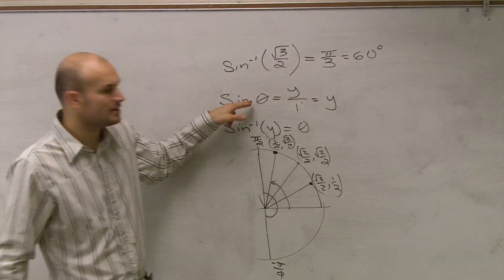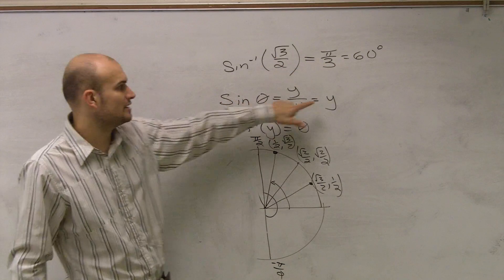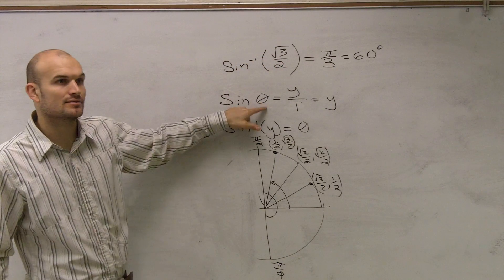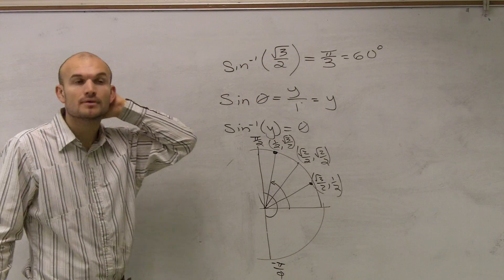Yeah, because remember, you're trying to find the angle, right? If I say sine of an angle equals y, what I gave you was, I gave you y. So, we're trying to find the angle. So, that's where we're working backwards.